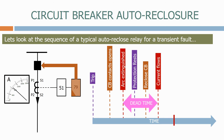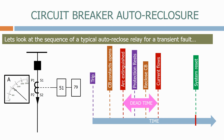After the current starts flowing again and we don't detect any further faults, we reset the auto reclose system and it goes back to its original state. The difference in time between when the current starts flowing and the system resets is called the reclaim time. This is the time during which we check to make sure the system is healthy. Both the dead time and the reclaim time are adjustable settings that we can apply to the auto reclose system.